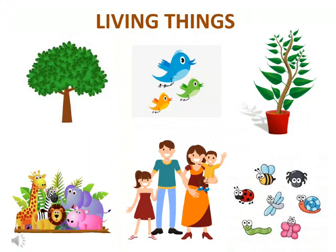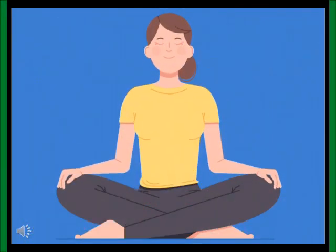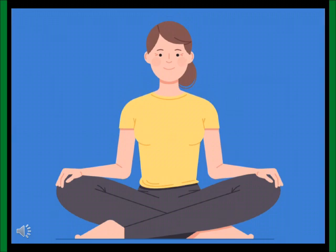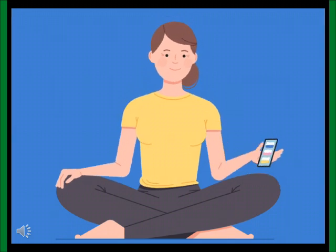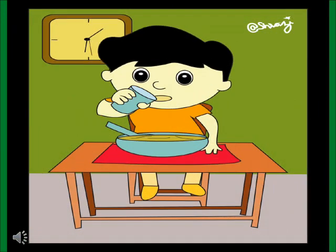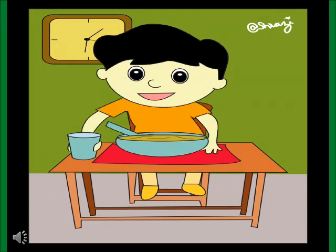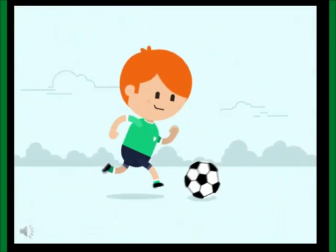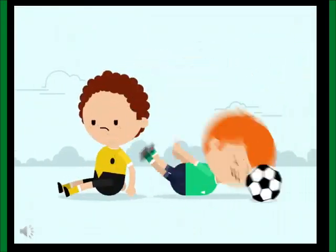Trees, birds, plants, animals, human beings, and insects are called living things. Do you know why they are called living things? Because they can breathe with the help of oxygen. They can eat. They can move on their own.